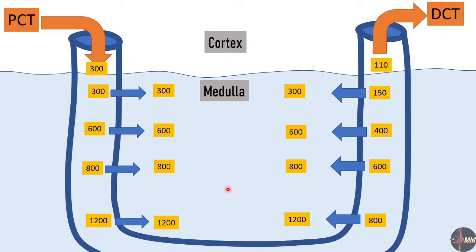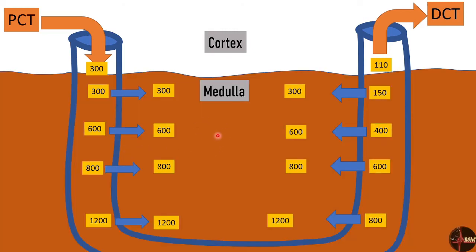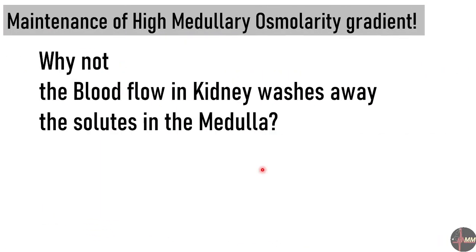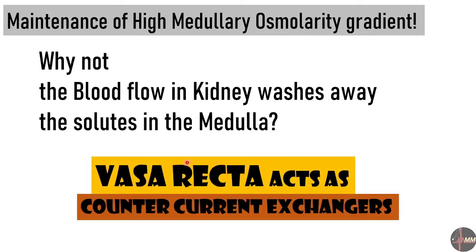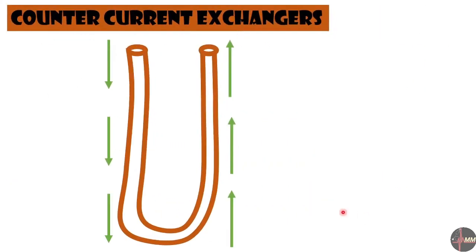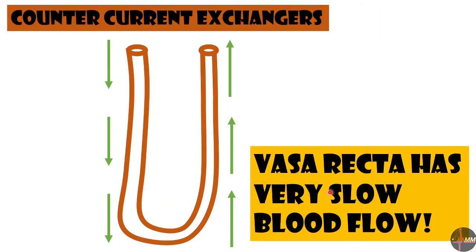One important question: blood flows to every organ, so why doesn't the blood flow wash away these solutes from the medulla? It is because of the vasa recta — very special capillaries present in the medulla that act as counter current exchangers. The vasa recta has very slow blood flow, which is very important. Because of this very slow blood flow, the solutes are not removed.